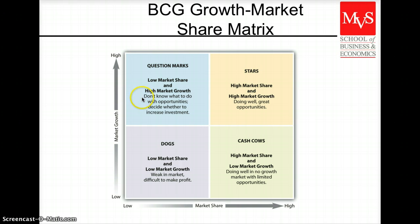A third kind will be the question mark — sometimes called the problem children. Those are products that have low market share in a fast-growth market. When we are in a question mark situation, it's suggesting that the firm has failed to compete successfully. Maybe because that product is offering fewer benefits than competing products, or maybe our prices are too high, or our distributors are not effective, or even our advertising is not working. So you need to decide what you want to do with this kind of product. And finally, the dogs, which are low-low — we have a product in a market that is not growing, and we also have a very, very low market share.